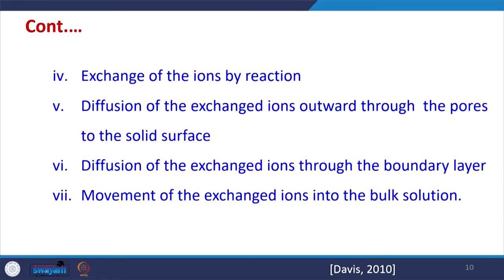The fourth step is the exchange of ions by the reaction itself — this may be strong or weak, and how quickly this exchange reaction takes place is very important. Unlike adsorption, for ion exchange there are additional steps: the exchange ion must come out through the pores of the solid surface, followed by diffusion of the exchange ion through the boundary layer, and finally movement of the exchange ion back into the bulk solution.